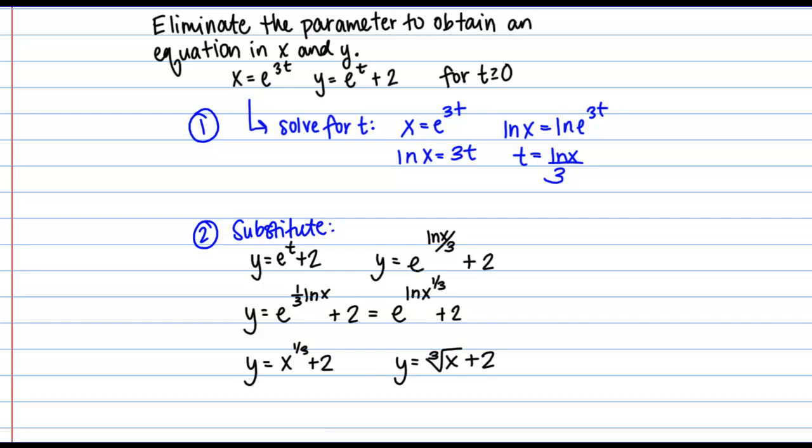So what do I mean by that? So we know that we only want t's greater than or equal to 0. So what does that tell me about x? So if you recall, our original parametric equation was x equals e to the 3t.